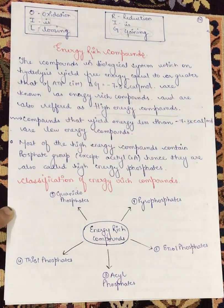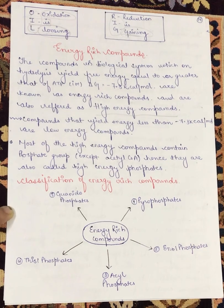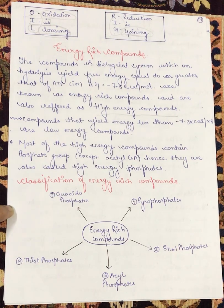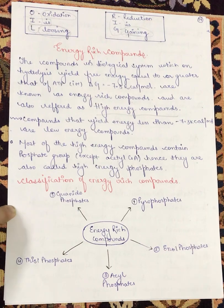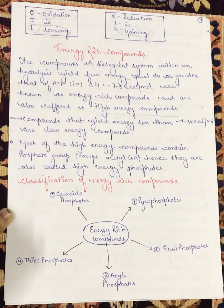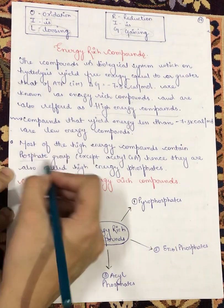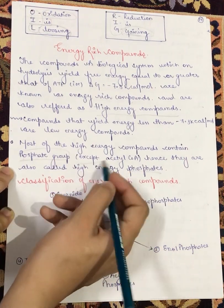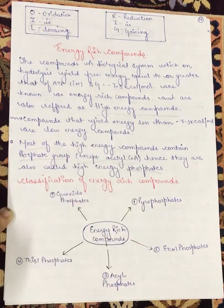Energy-rich compounds are also referred to as high-energy compounds. Most of the high-energy compounds contain a phosphate group, except acetyl coenzyme A. Hence, they are also called high-energy phosphates. Since exceptions are always there in chemistry, but in the main molecules a phosphate group will be present — so we also refer to them as high-energy phosphates, except acetyl coenzyme A.